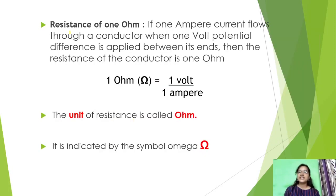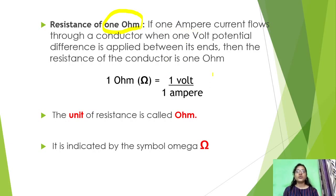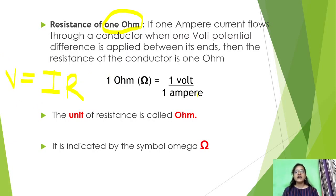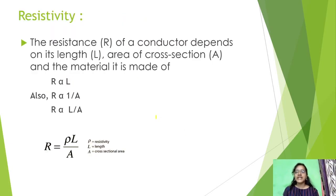How do we represent resistance? The resistance of 1 ohm: a conductor is said to have a resistance of 1 ohm when 1 ampere of current flows through it and 1 volt of potential difference is applied between its two ends. So 1 ohm equals 1 volt upon 1 ampere. The unit of resistance is ohm and it is indicated by the symbol omega.